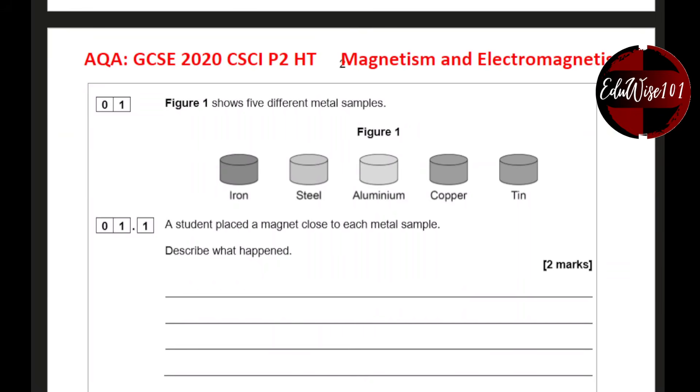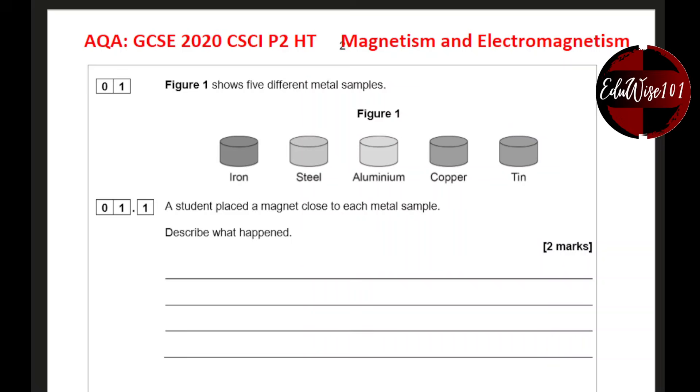So let's have a look at question number one. Question one, figure one shows five different metal samples: iron, steel, aluminium, copper and tin. A student placed a magnet close to each metal sample. Describe what happens.